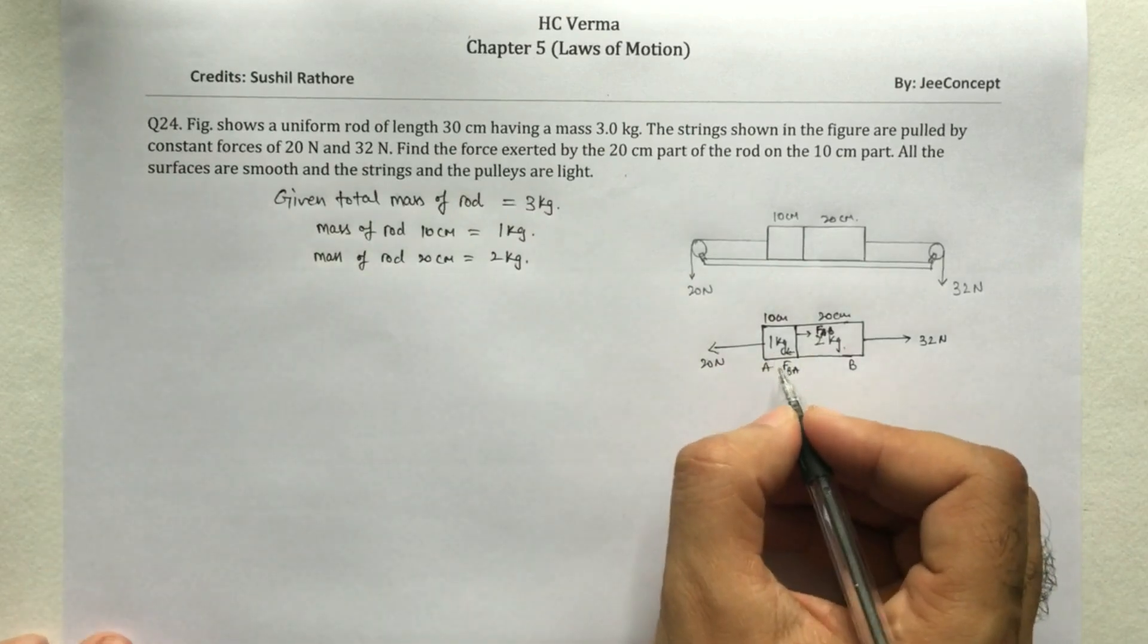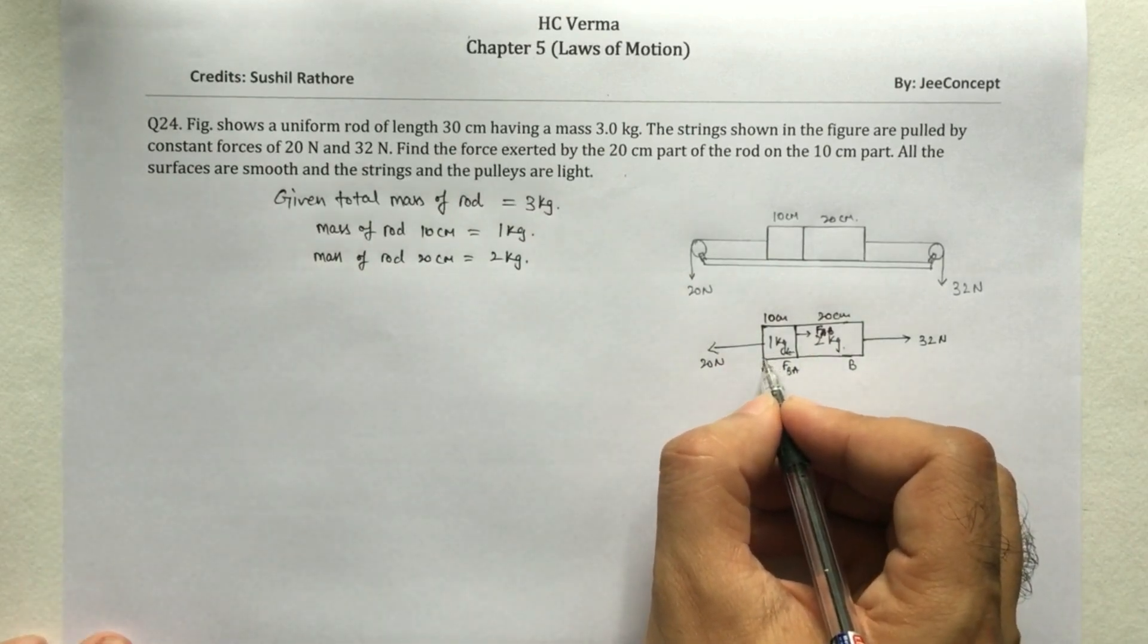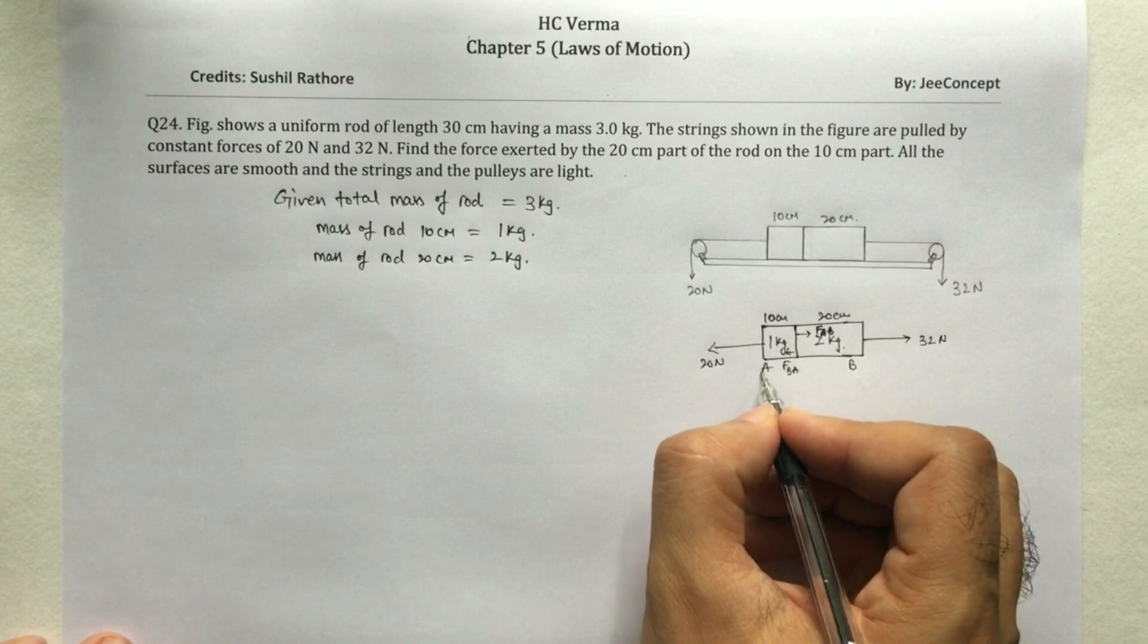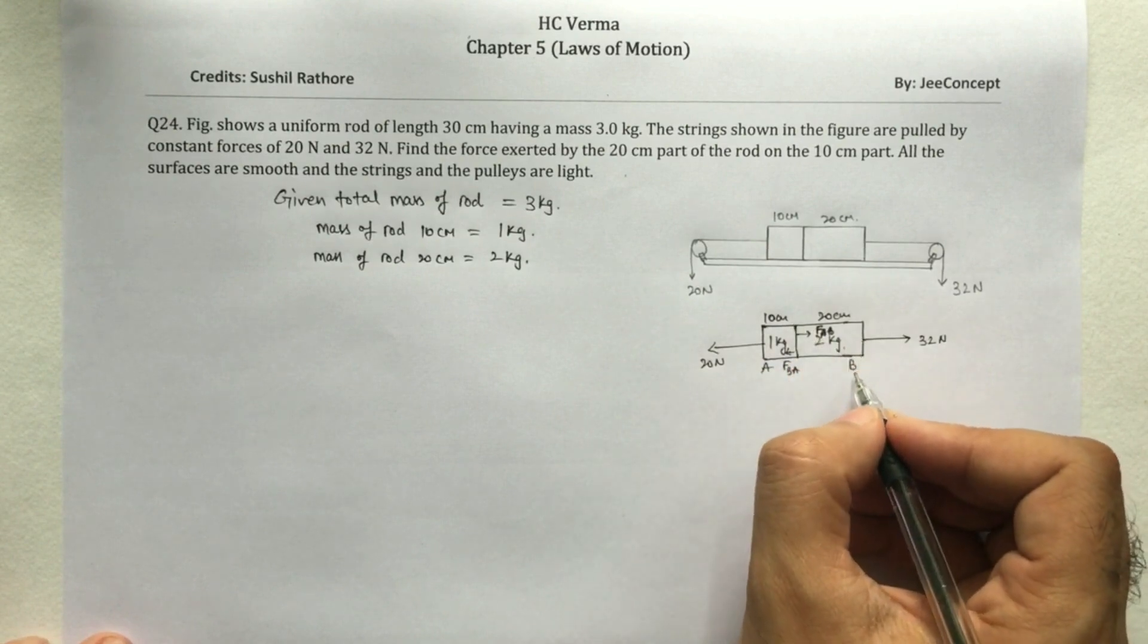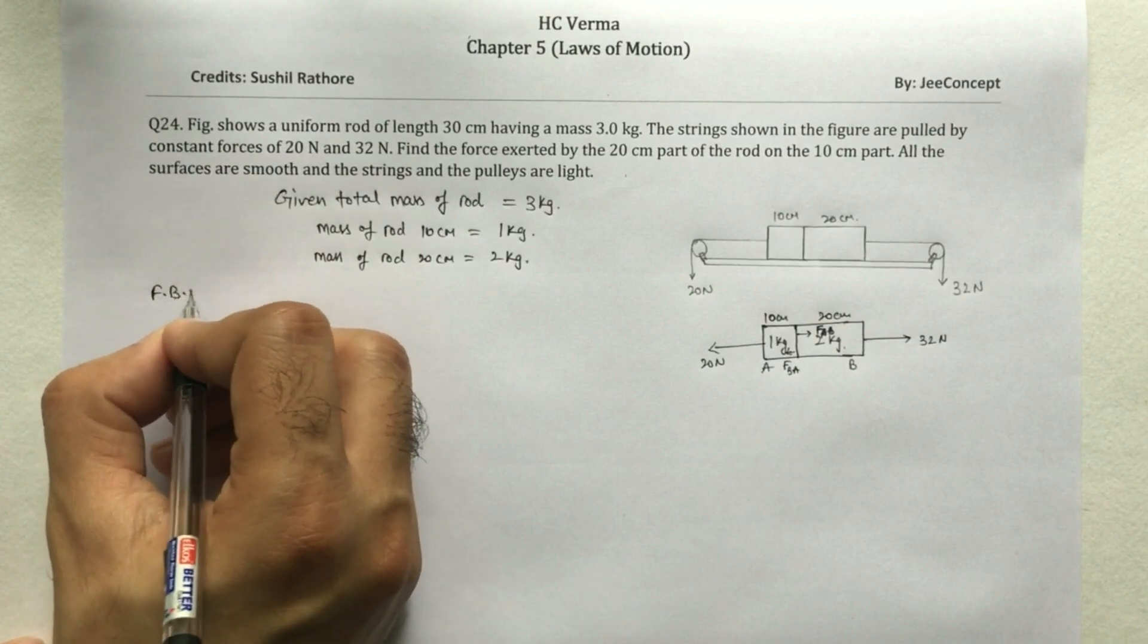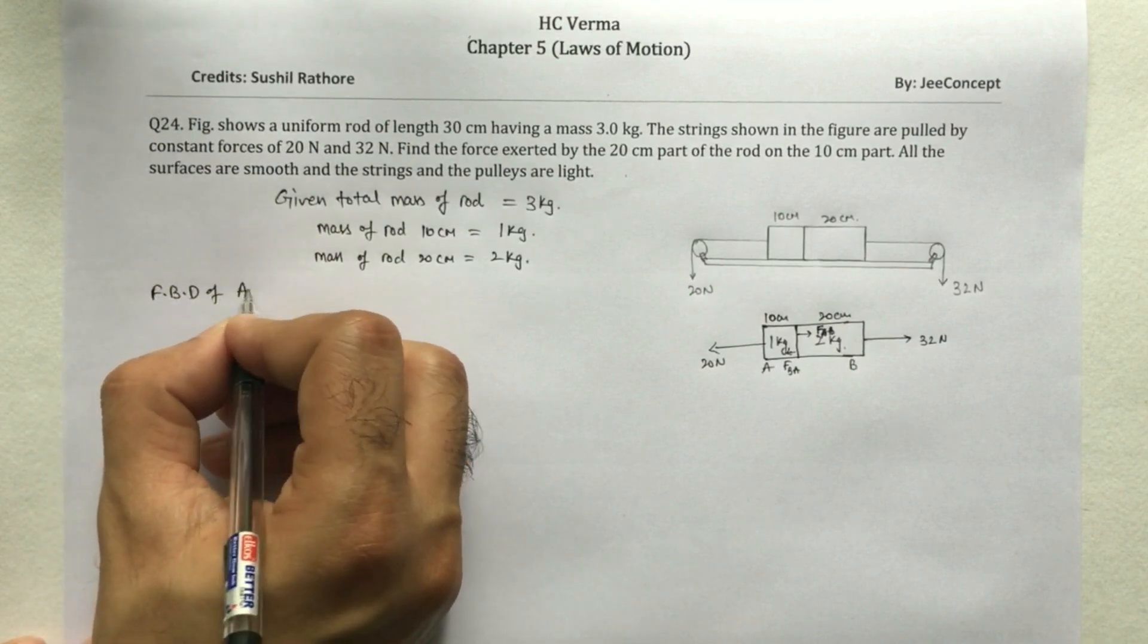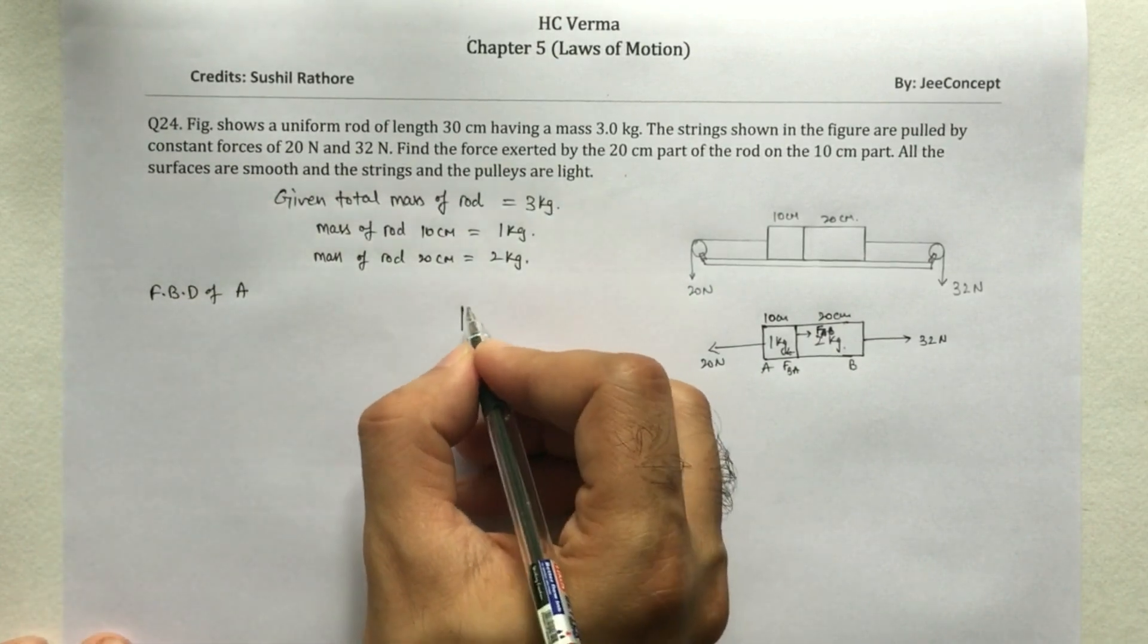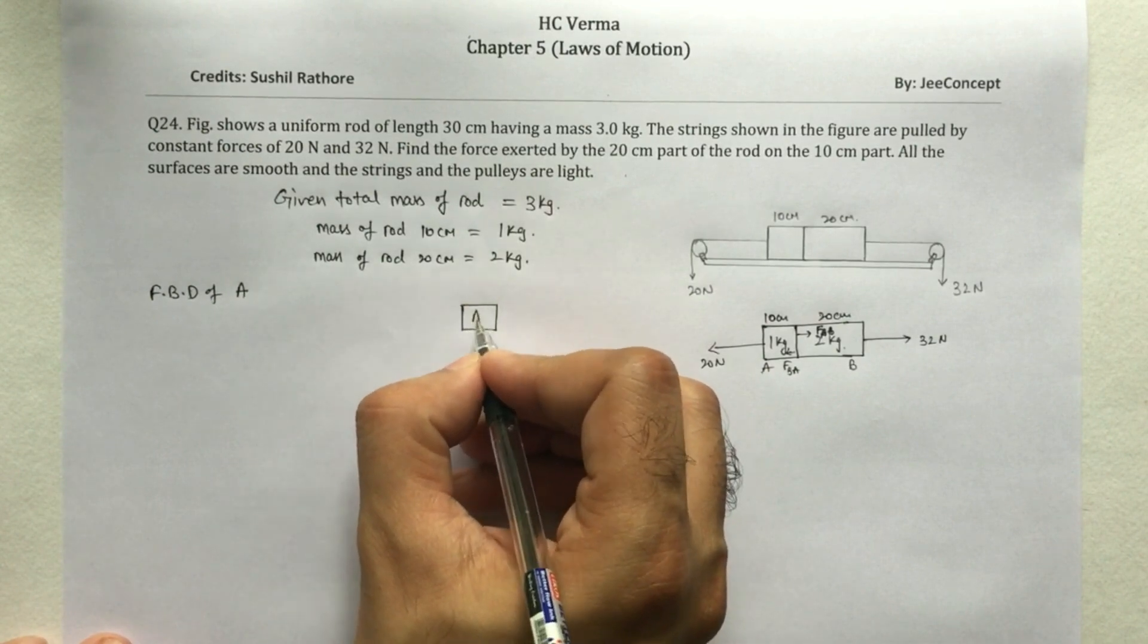Now, say the rod segment having 10 cm is A and the rod segment having 20 cm is B. So FBD of A would be, so this is the FBD of A.